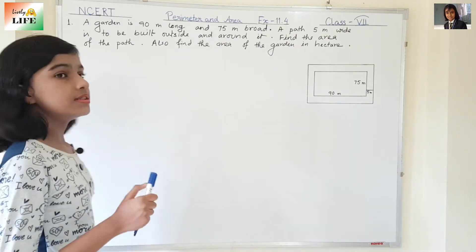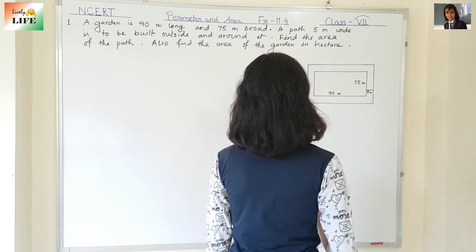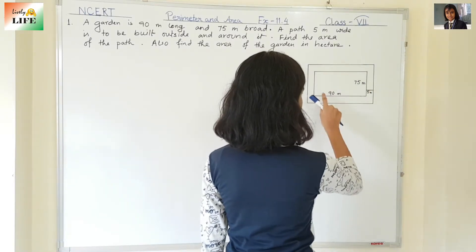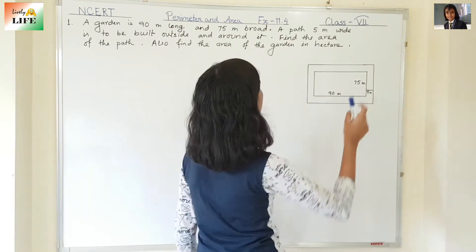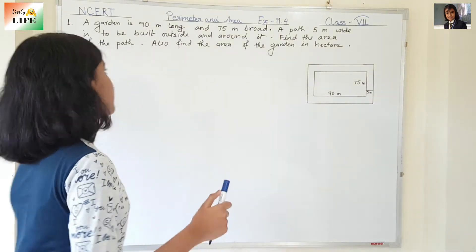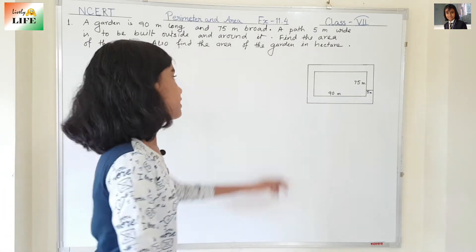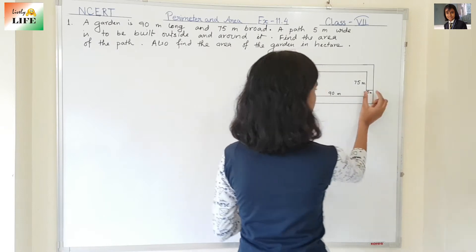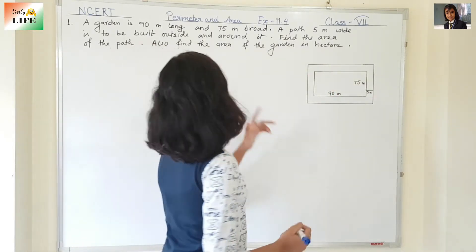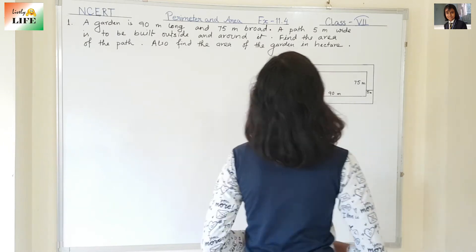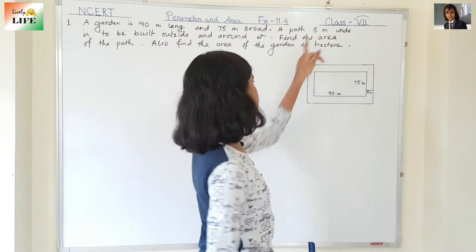A garden is 90 meter long and 75 meter broad. You can see this is the garden — length is 90 meter and breadth is 75 meter. A path five meter wide is to be built outside and around it. You can see this path is five meter wide, built outside and around it. Find the area of the path — we need to find the area of this path.